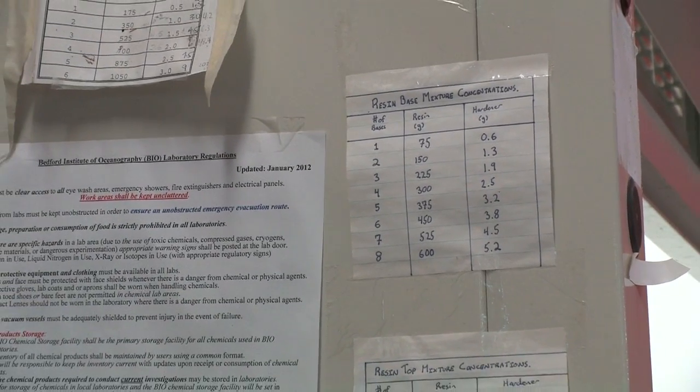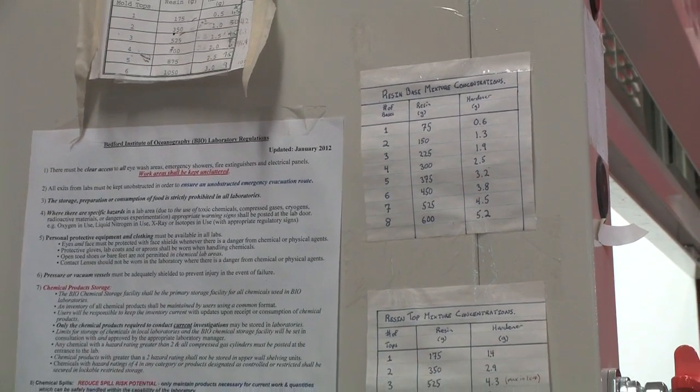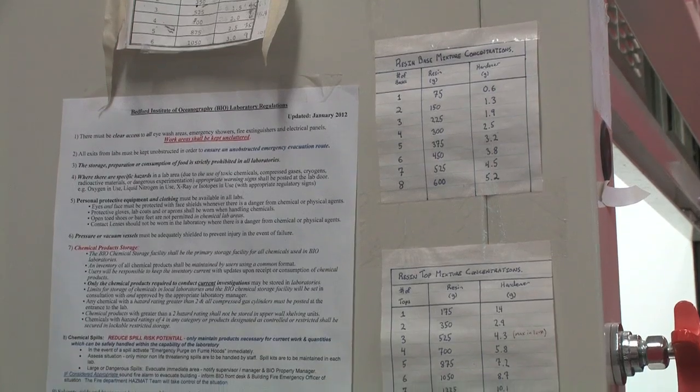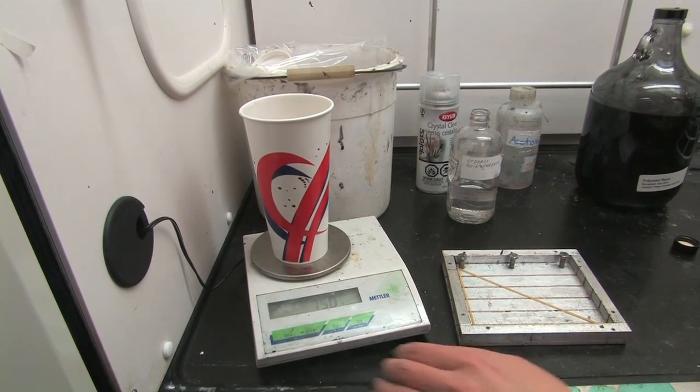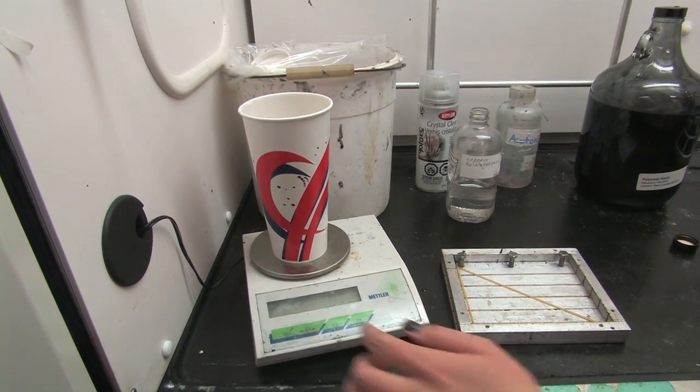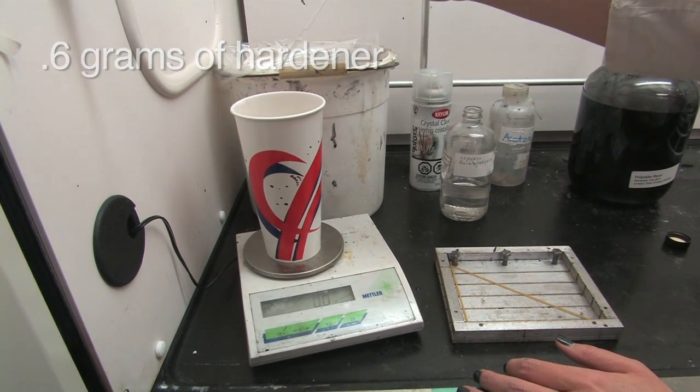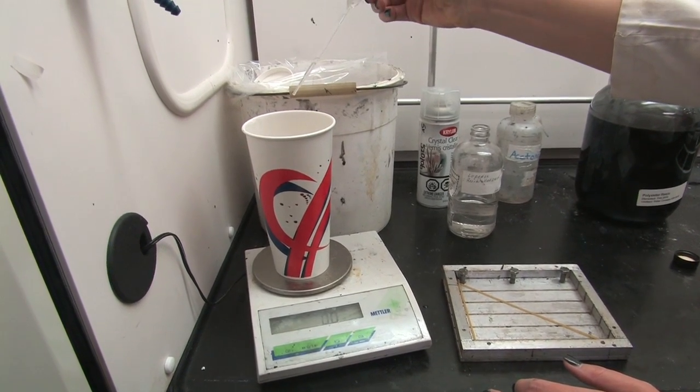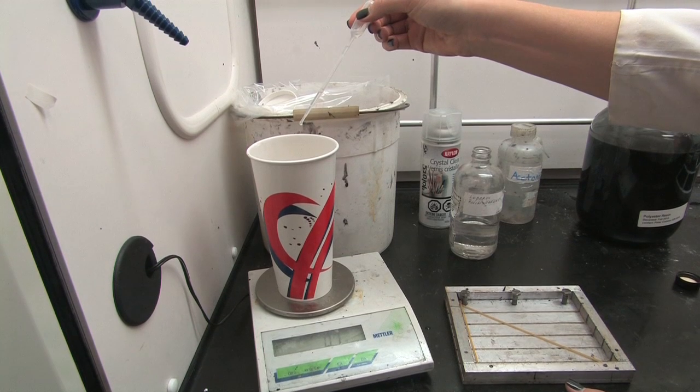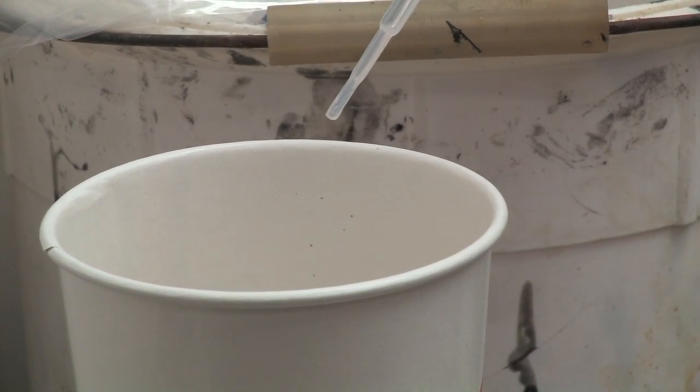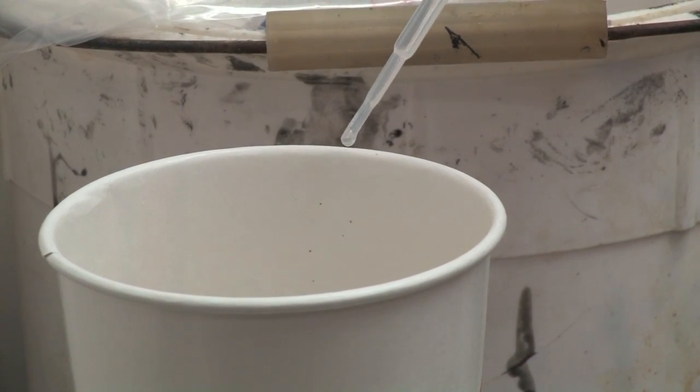In this lab we keep lists of resin to hardener concentrations on the side of the fume hood. Next, we add hardener. So we tare the scale again and based on our chart, we add 0.6 grams of hardener. This measurement has to be fairly exact because the epoxy and hardener together have an exothermic reaction and if mixed incorrectly could cause a fire.